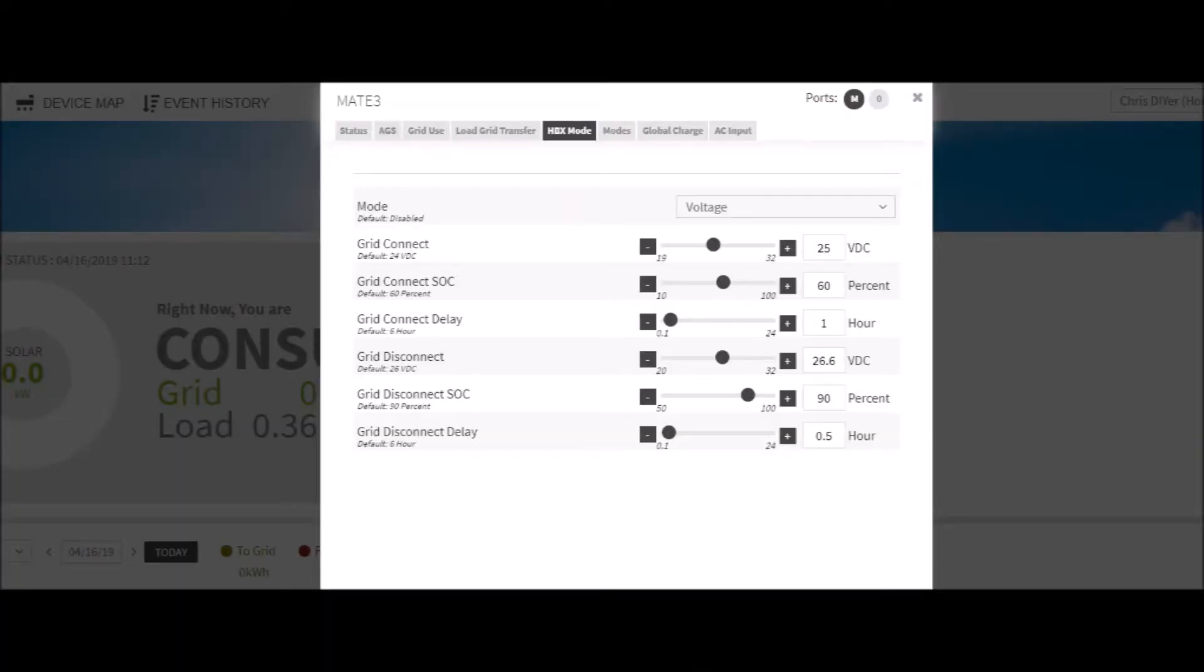All right, this is off the Outback Power Mate 3 HBX mode. As you can see, 25 volts for about an hour is when I connect back to the grid. It's when the battery bank gets down to 25 volts. And then I disconnect from the grid when it reaches 26.6 for about a half an hour.